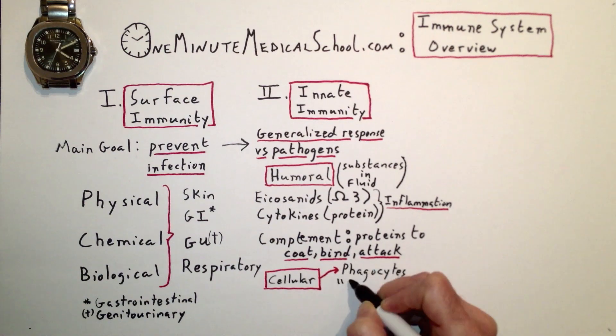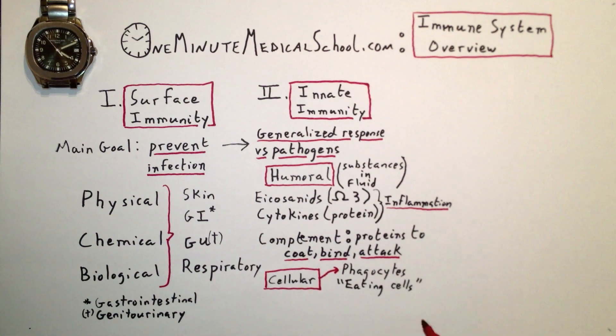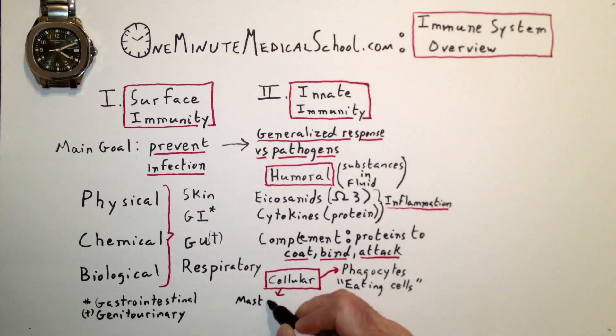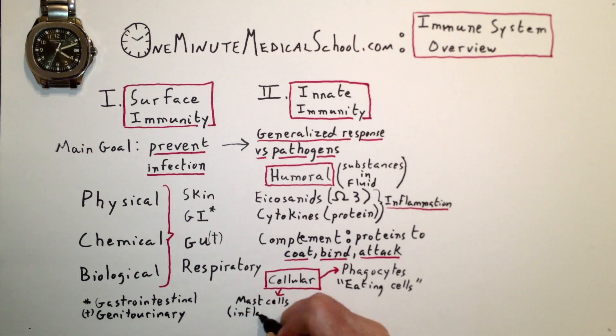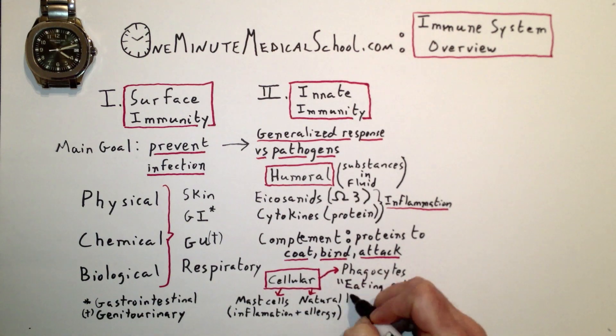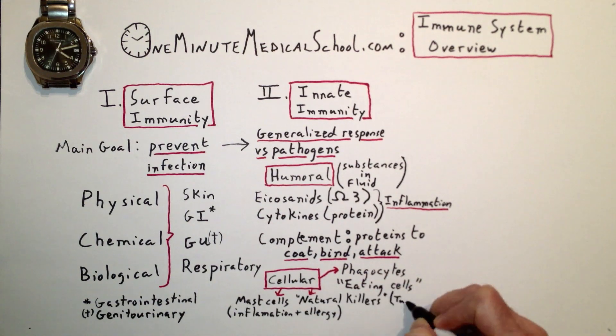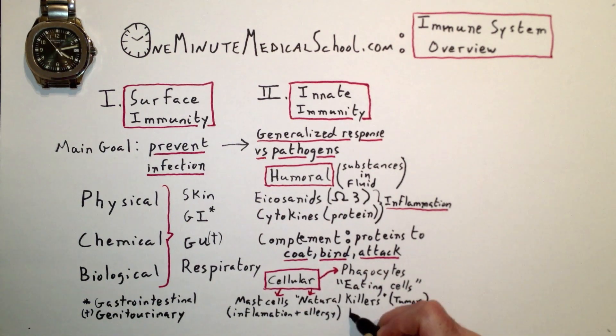It has cellular components, including phagocytes, which eat bacteria and viruses; mast cells, which moderate inflammation and allergy; and natural killer cells, which attack tumors.